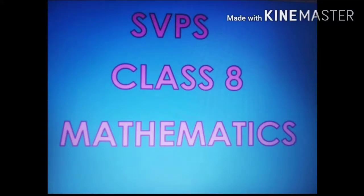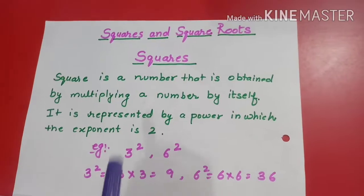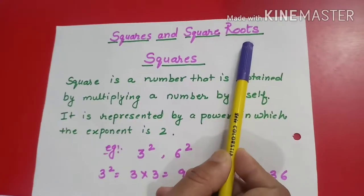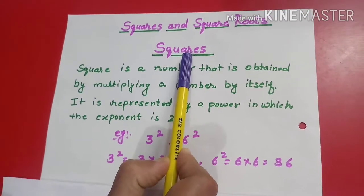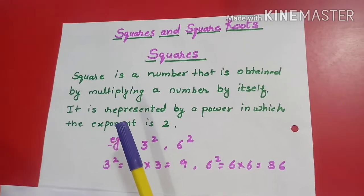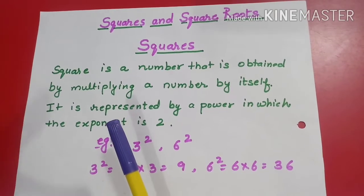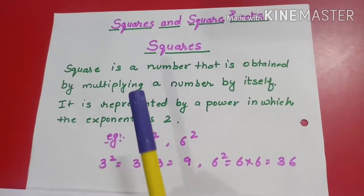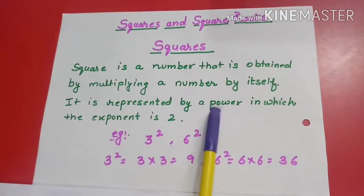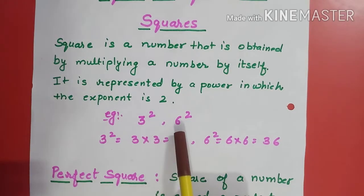Hello students, welcome back to the math class. Today we are going to start our next chapter — squares and square roots. So first we will cover the first topic, that is squares. A square is a number that is obtained by multiplying a number by itself. It is represented by a power in which the exponent is 2, for example 3 raised to power 2 and 6 raised to power 2.